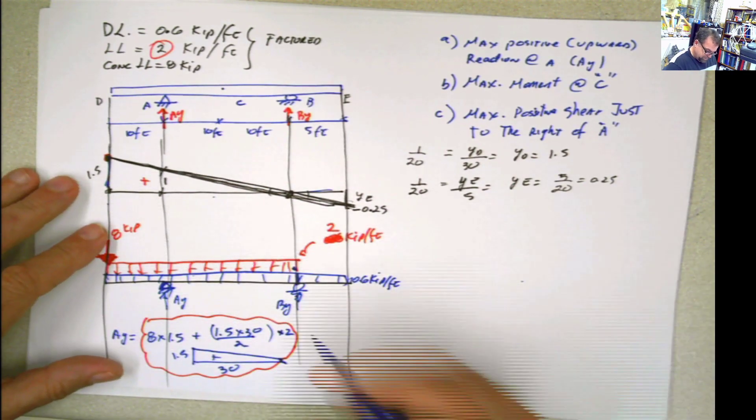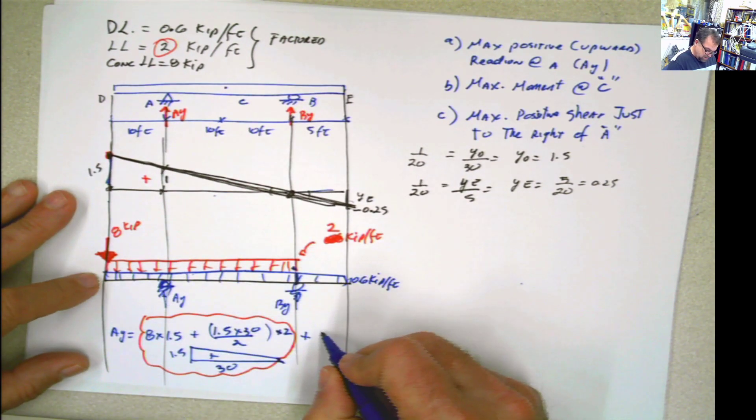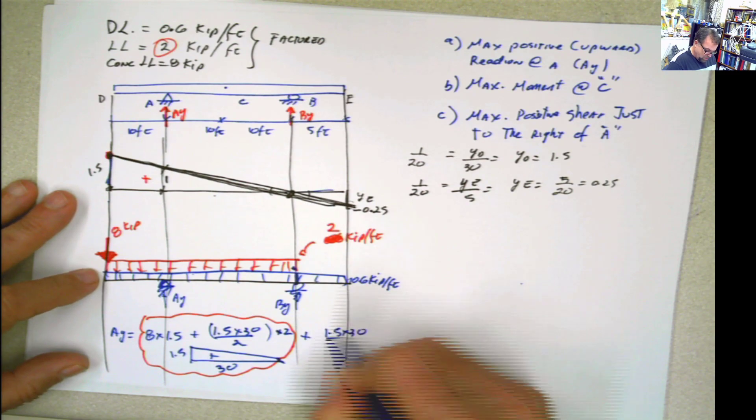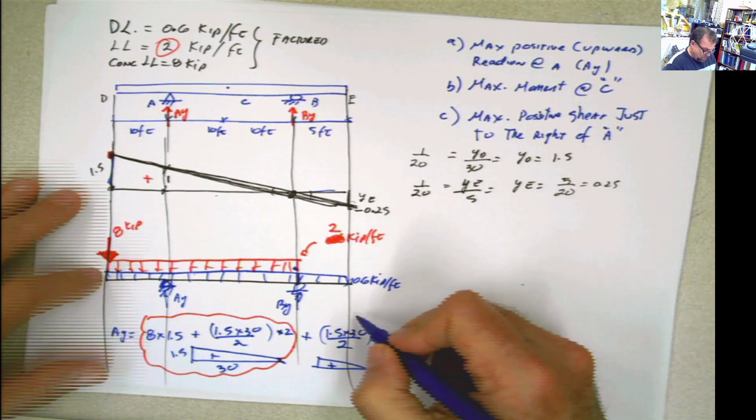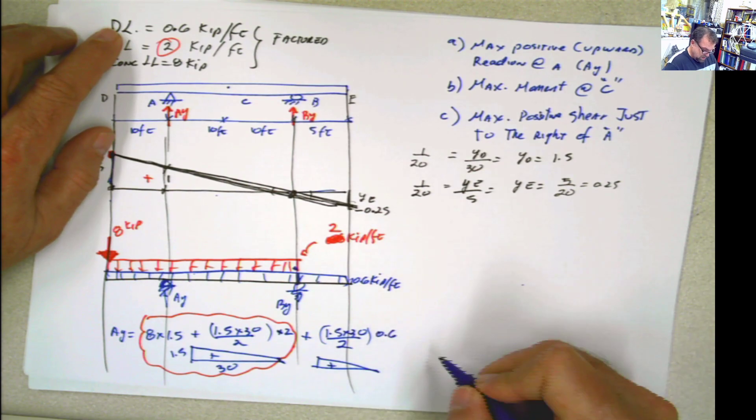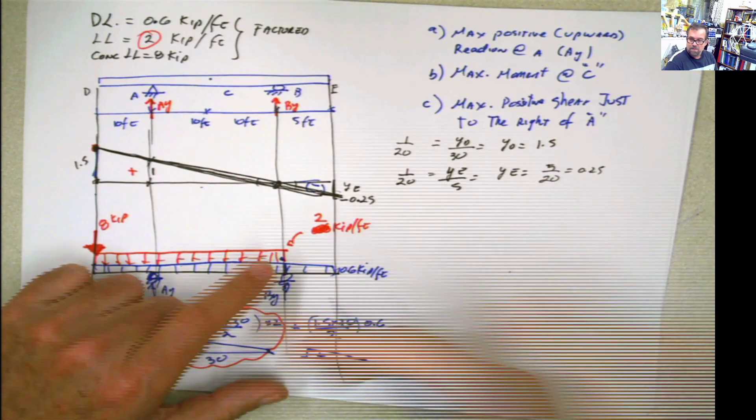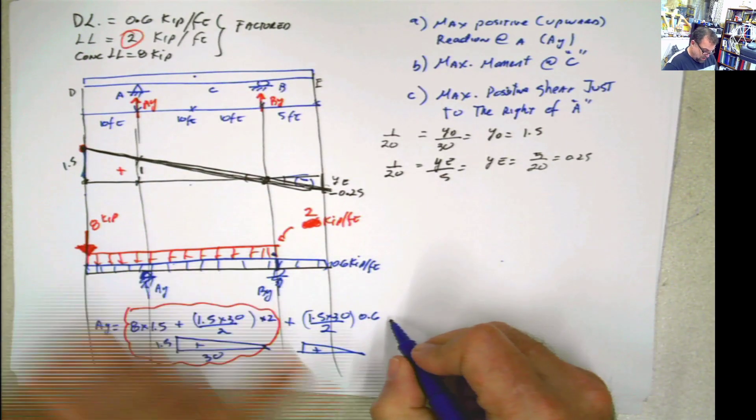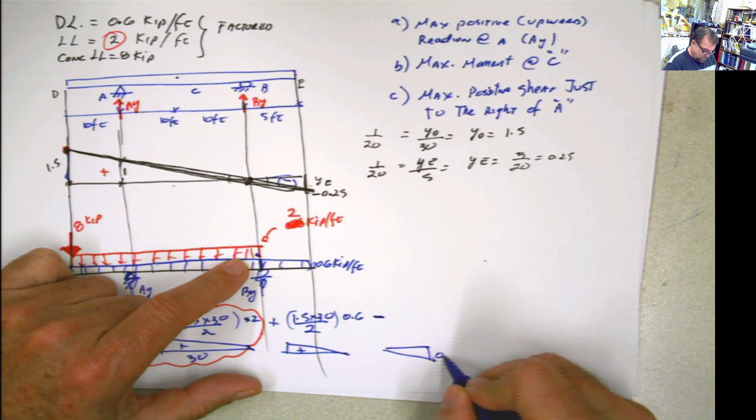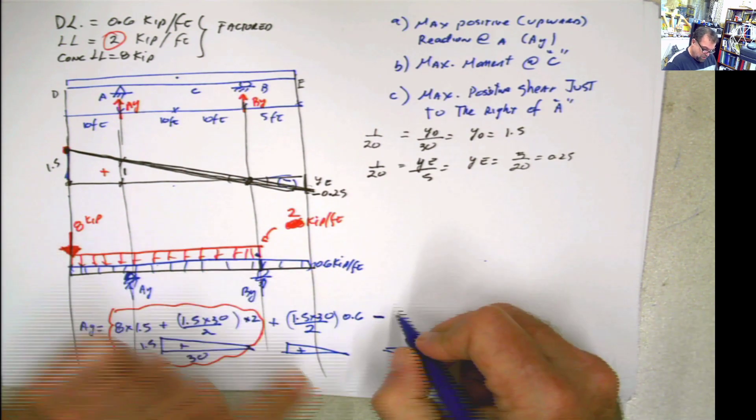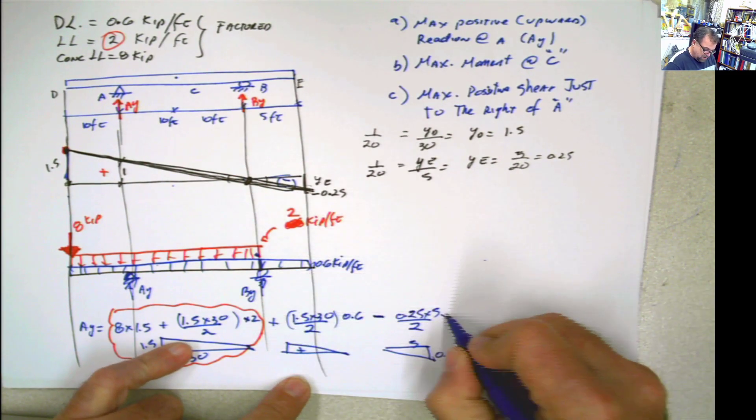Now, the dead load is here. I should have put this in a different color. So this is live load. Now, plus the dead load. The dead load, we're going to have the same area here, which is going to be 1.5 times 30 divided by 2, the triangular positive area, multiplied by the value of the dead load, which is 0.6. But then I have to include this negative area also, because there's no way that I can just disappear the dead load from there. Then we just get that part, and we subtract that area, 0.25 times 5 divided by 2, multiplied by 0.6.